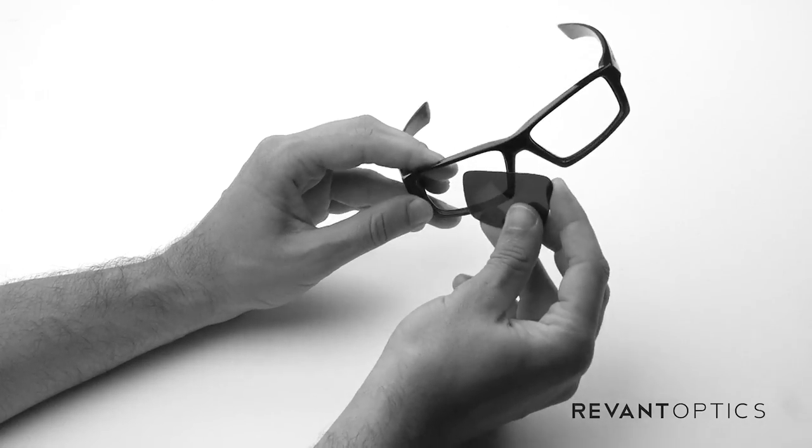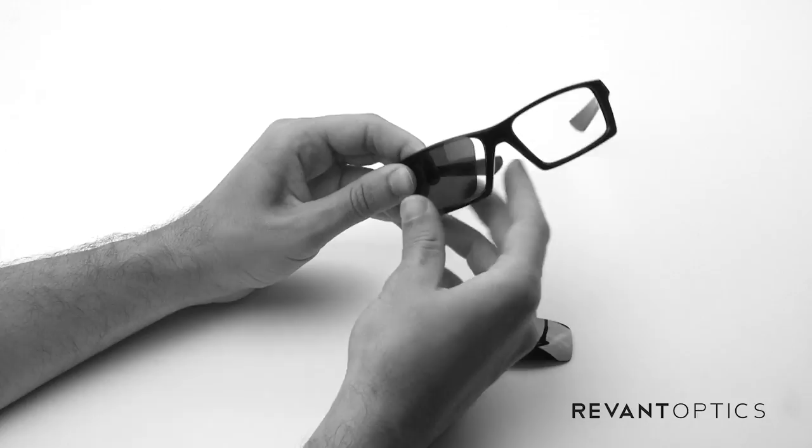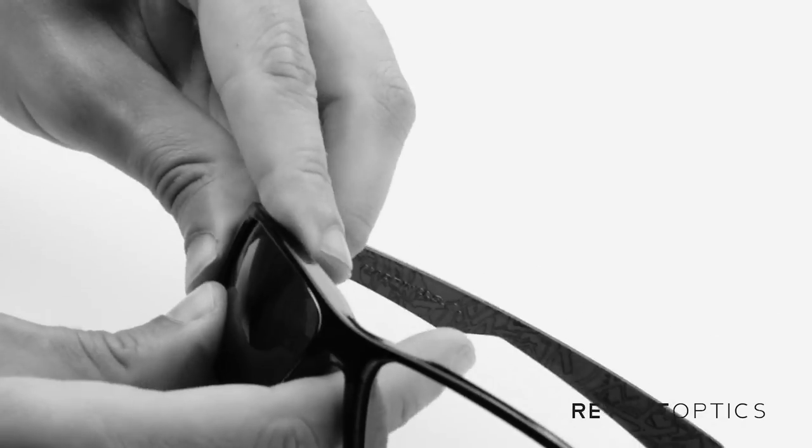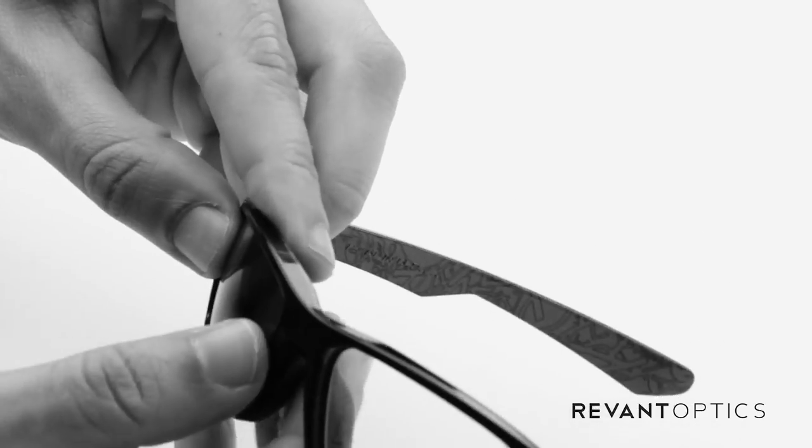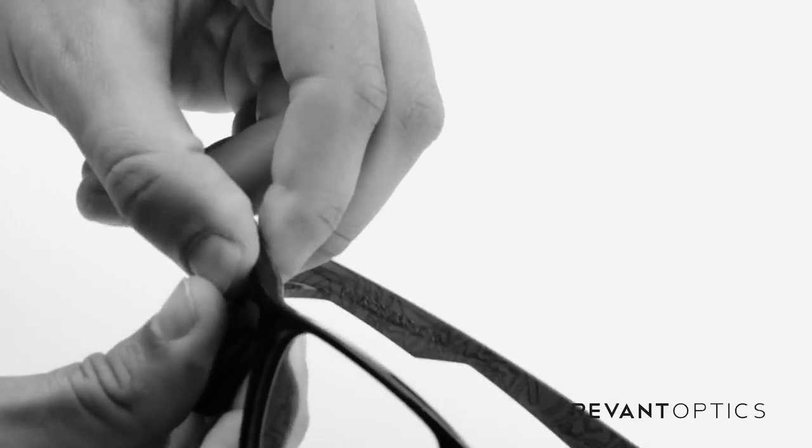So the way you want to install the lenses is go ahead and line up the outside edge in the groove on the frame there. It may take a minute to get it in place. Once it's seated in the groove, you're going to push on the inside with your thumb and pop that into place.